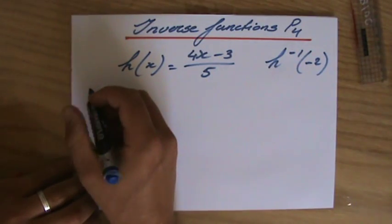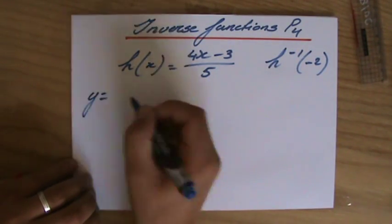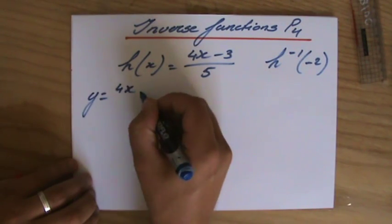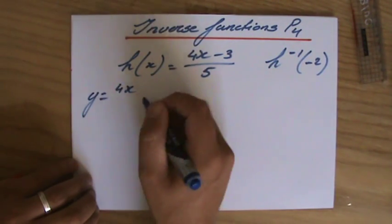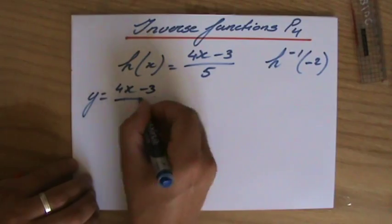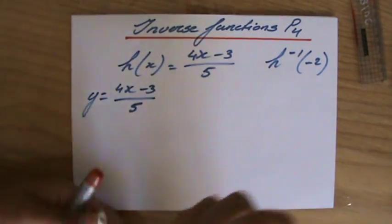So I'm going to find the inverse of h first. Before I start, rather than h(x), I'm going to write y. Then to find the inverse, I swap x and y.